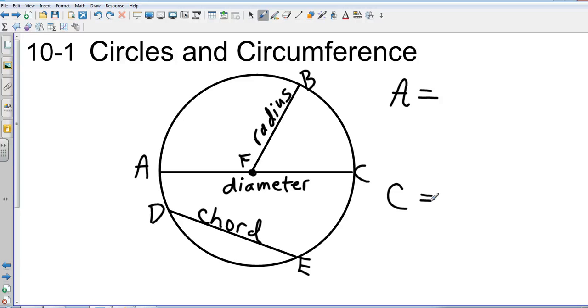So circumference - let's look at circumference first. Circumference can be found using pi times the diameter (πd).